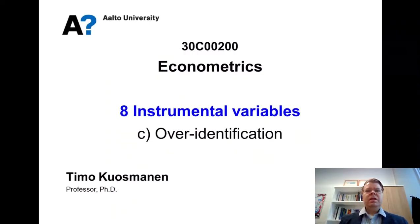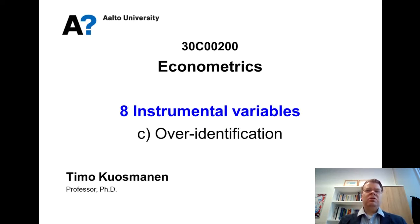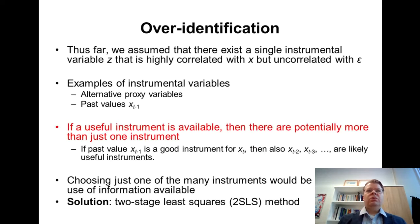In the previous lesson on instrumental variables theory, I mainly focused on the single regression case, assuming a single instrument Z. In that case, where we have as many instruments as we have endogenous regressors, we would say that the model is exactly identified. But in many cases, we have the situation with over-identification, and this forms the topic of the present lesson.